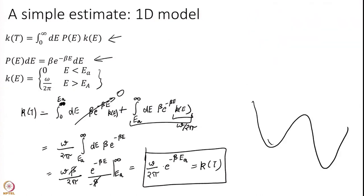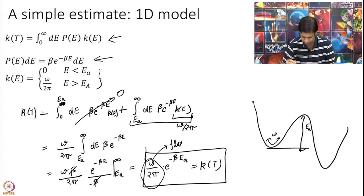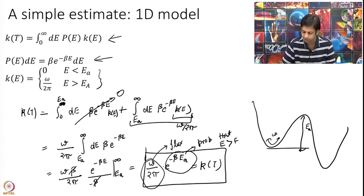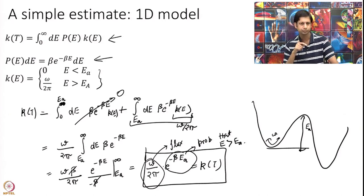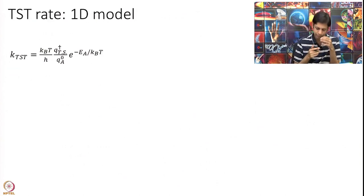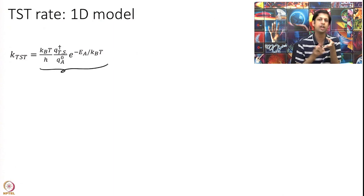This result is very physical: ω/2π is my flux — the rate constant at which I will traverse the transition state — and e^{-βEa} is the probability that the energy is greater than Ea in 1D. So I multiply the flux by the probability that my energy exceeds Ea, and that is my rate constant. Now let us get back to Transition State Theory, which gives a much more sophisticated rate formula. Is it at all related to the formula we just wrote?